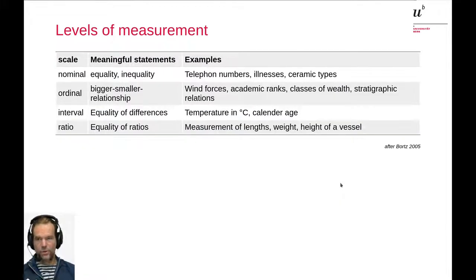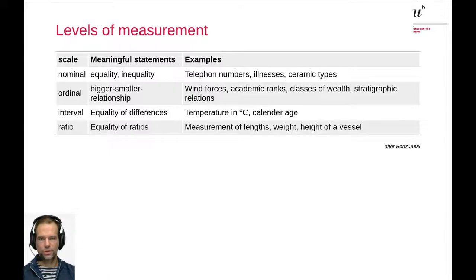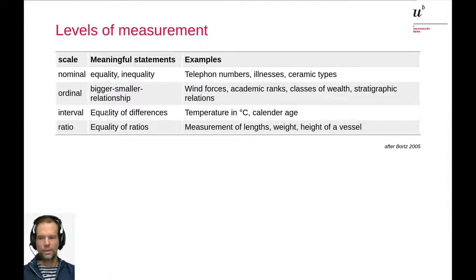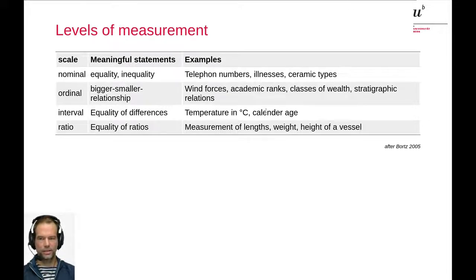Here are some examples: nominal scaled, you can define equality or inequality and nothing more - for example, telephone numbers, illnesses, but also ceramic types. Ordinal scaled, we have a bigger-smaller relationship - like stratigraphic relations, for example. With interval scaled, we can define that differences are the same - for calendar ages, a difference of 10 years is always the same difference no matter where on the absolute scale it occurs. While with ratio scale, we can compare ratios because we have an absolute zero point - for example, the height of a vessel is ratio scaled.